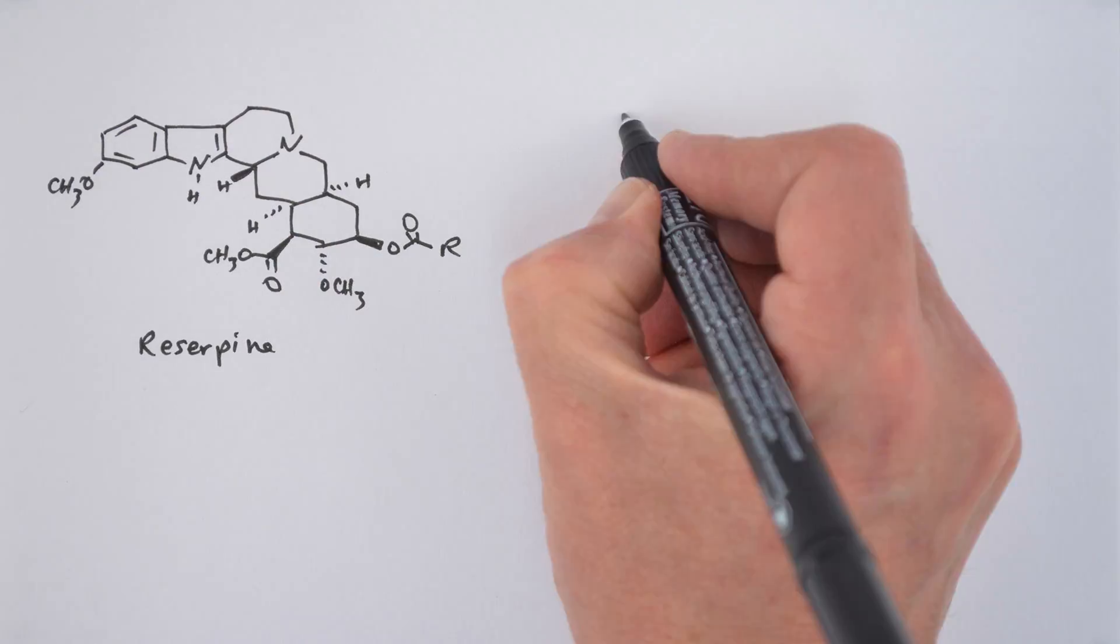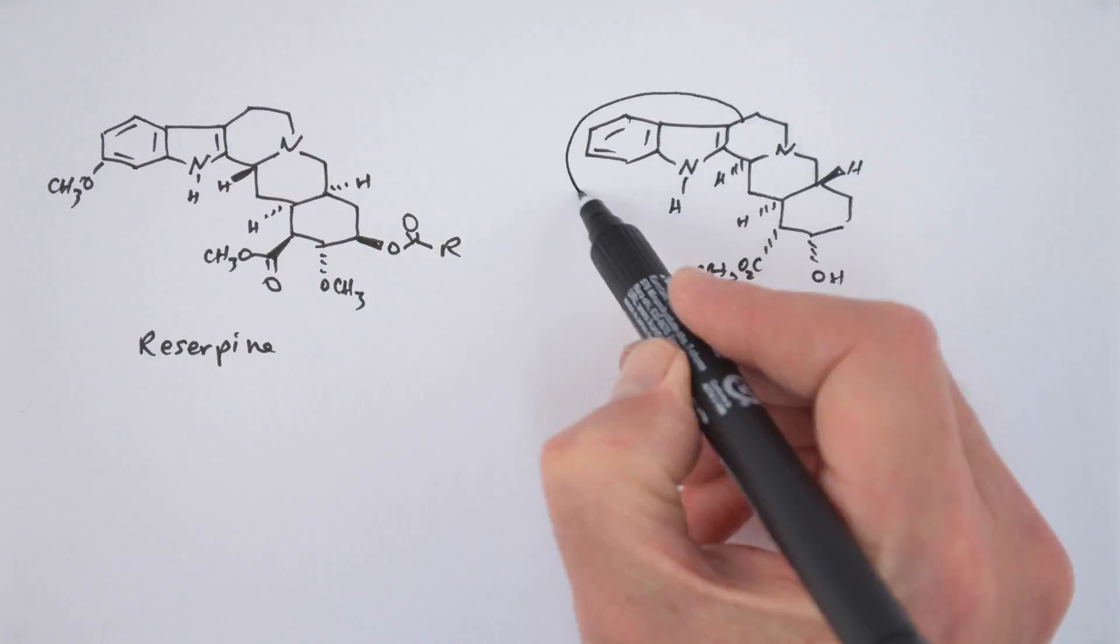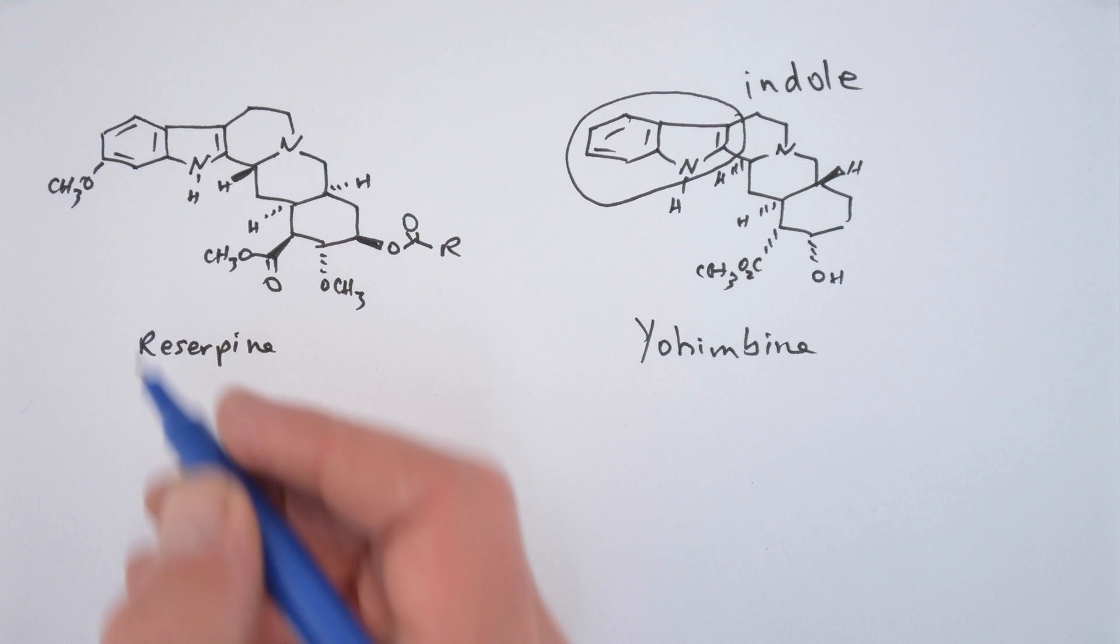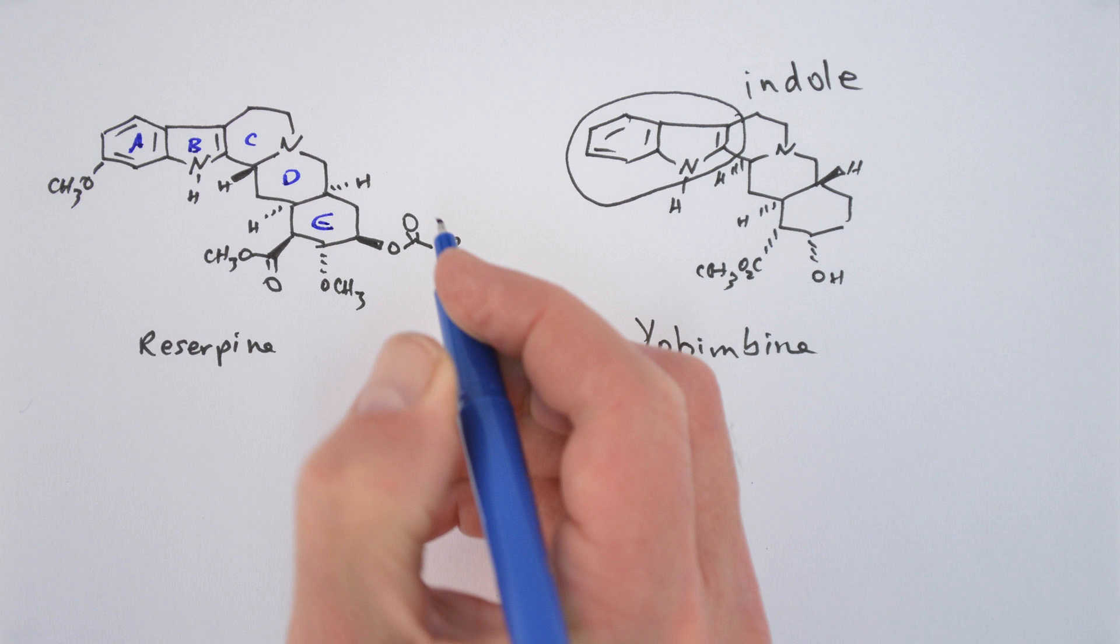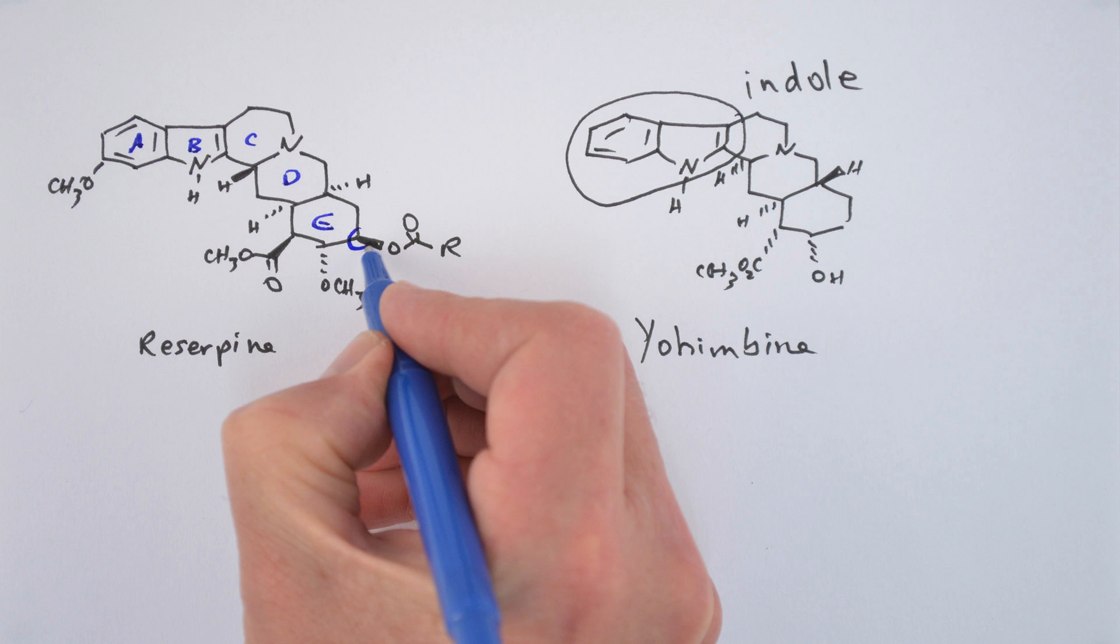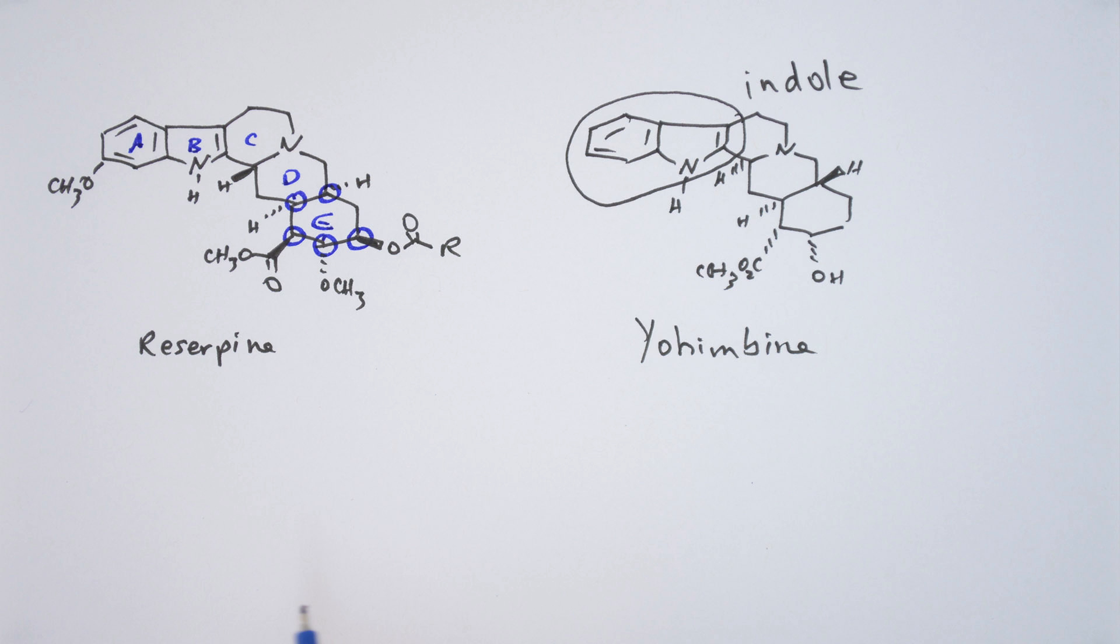Reserpine is a member of a well-known class of indole alkaloids known as yohimbine alkaloids. It has five rings labeled A to E. The indole portion of the molecule is aromatic and flat. Ring E contains five of the six chiral centers in the molecule. The DE ring junction is a cis-fused decalin type system whose conformational properties will play an important role at the end of the synthesis.